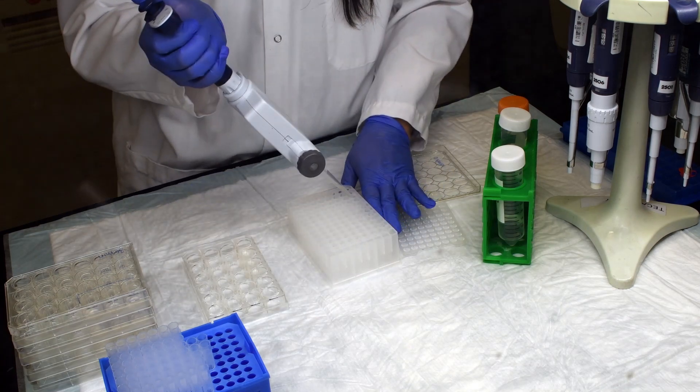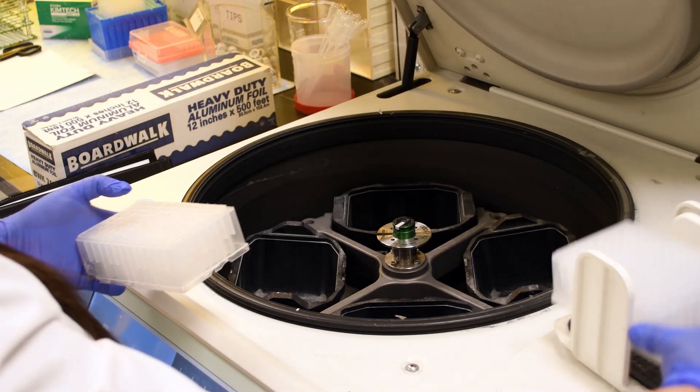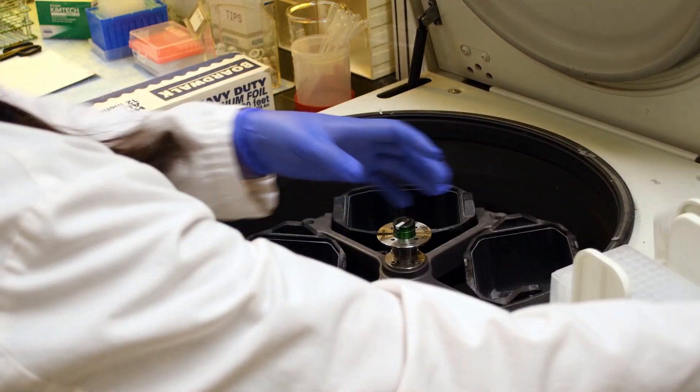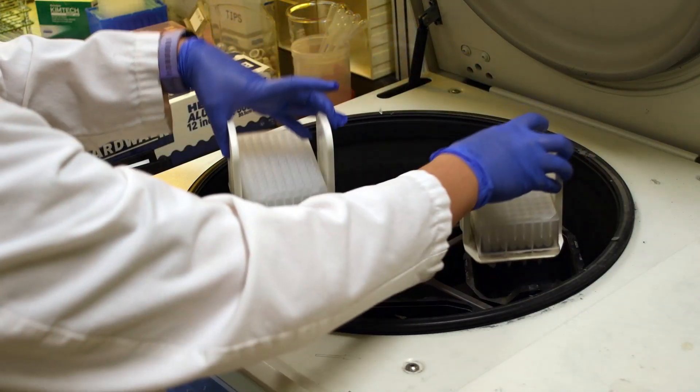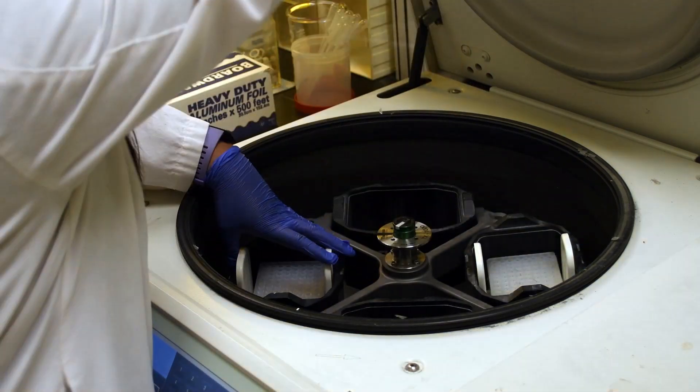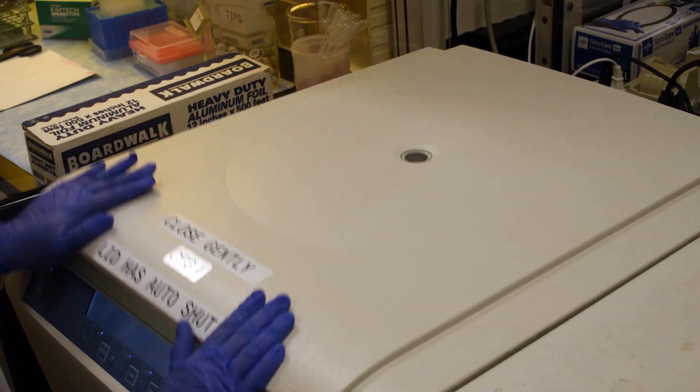Once all the samples are collected from all the time points, spin the plate at 920 times G for 10 minutes at 10 degrees Celsius. This will separate protein that precipitated during the cell lysis and allow for a clean transfer of solubilized sample for analysis.